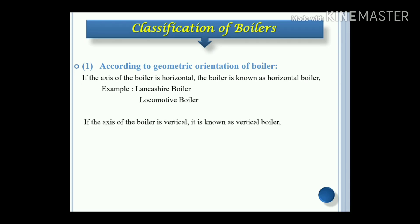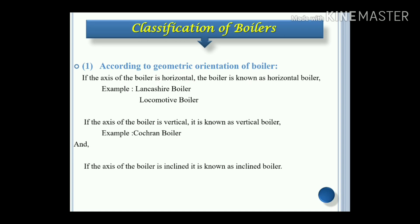If the axis of the boiler is vertical, it is known as a vertical boiler. Example: Cochran boiler. And if the axis of the boiler is inclined, it is known as an inclined boiler. So, as per the geometric orientation of the boiler, boilers are of three types: horizontal boiler, vertical boiler, and inclined boiler.